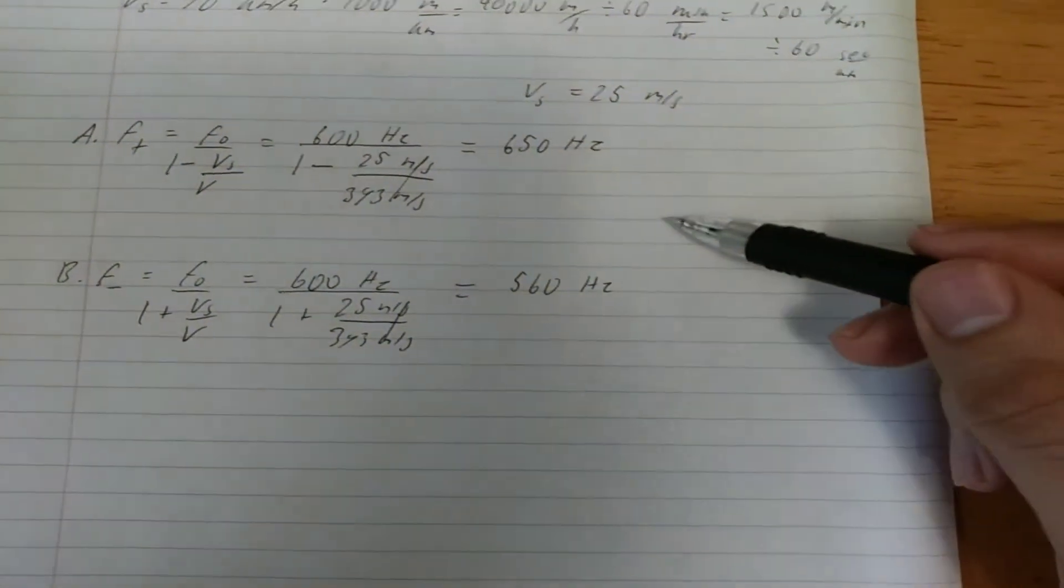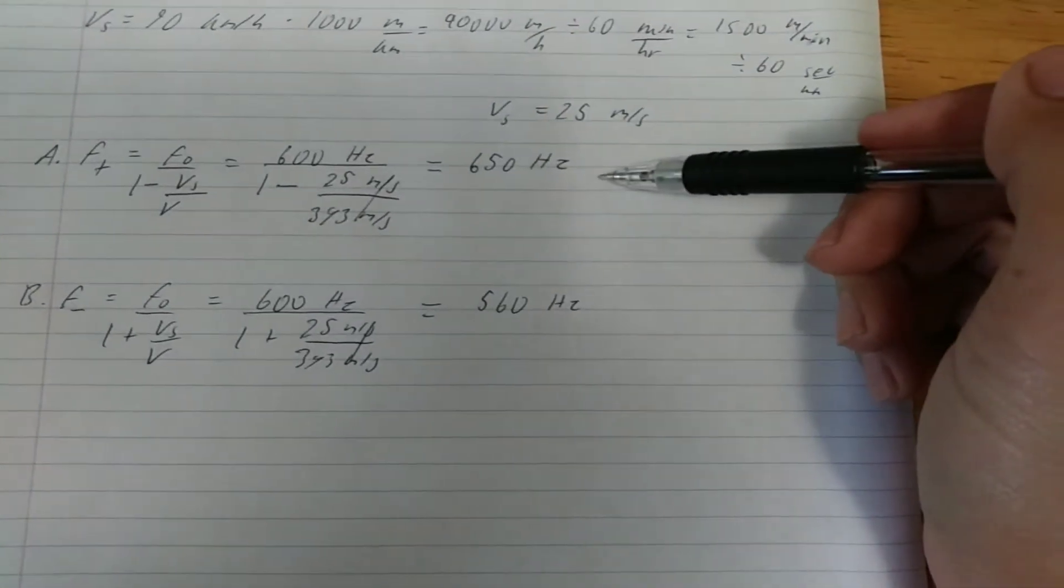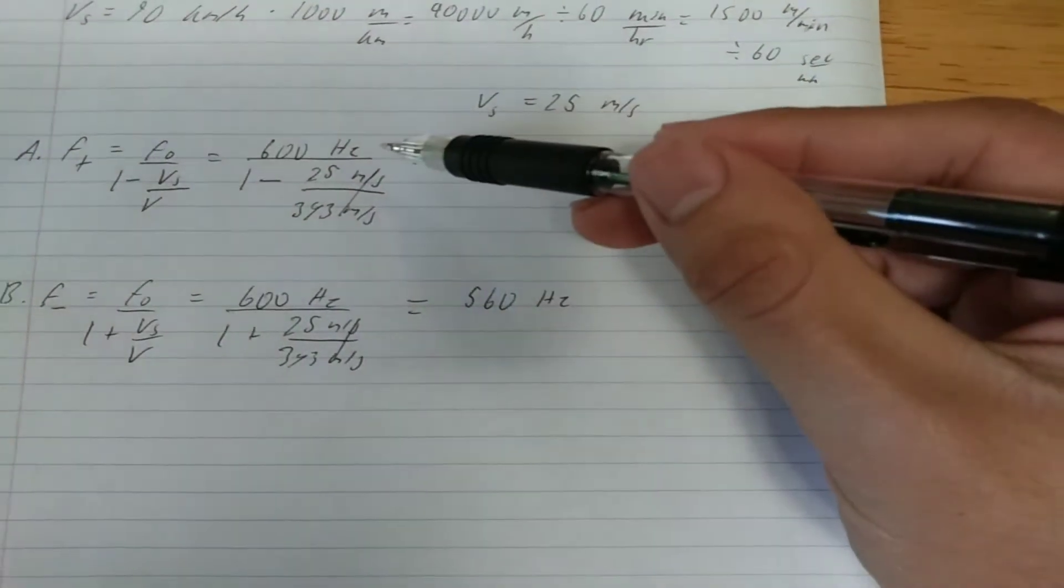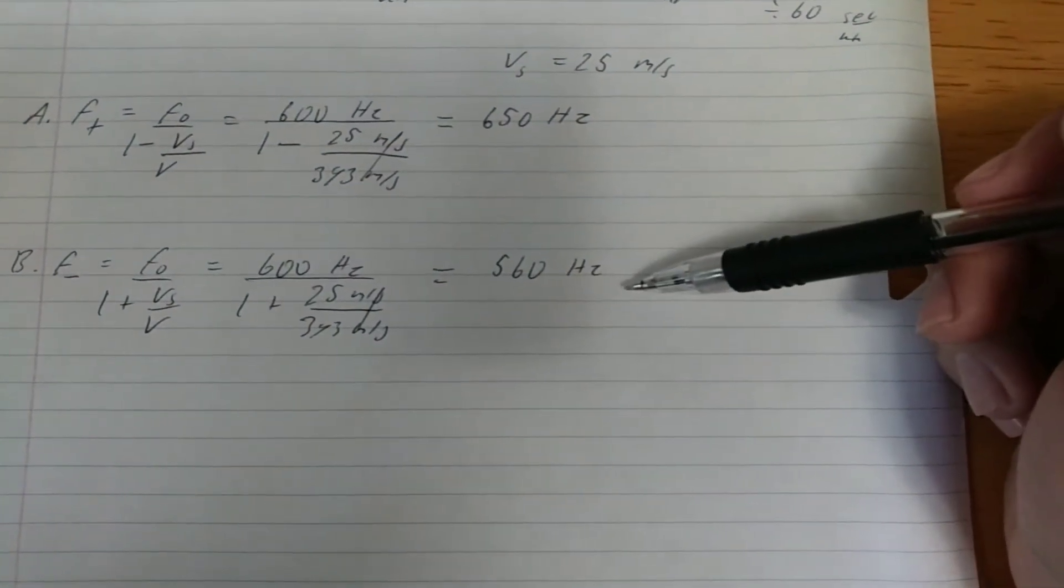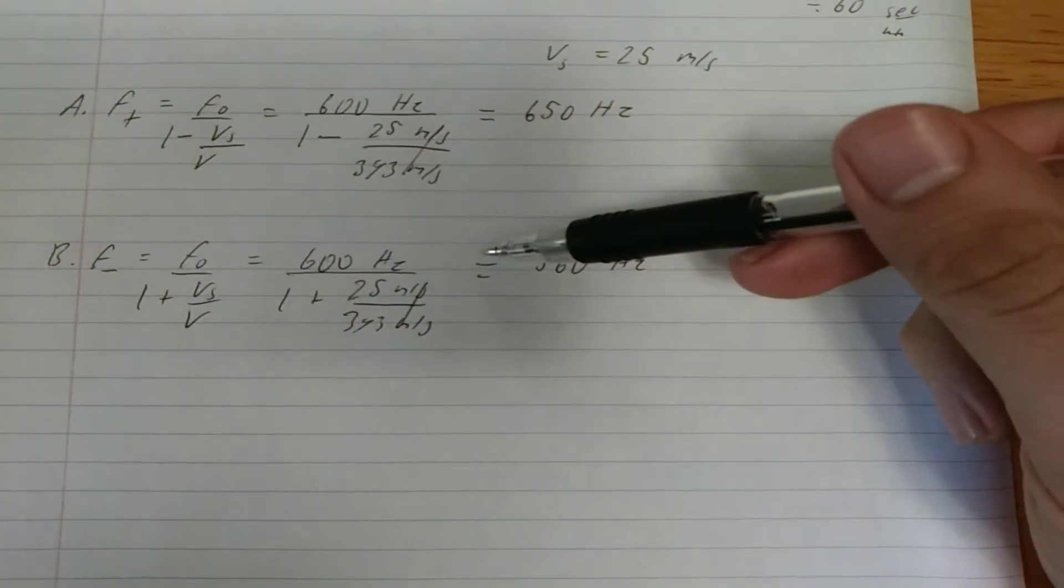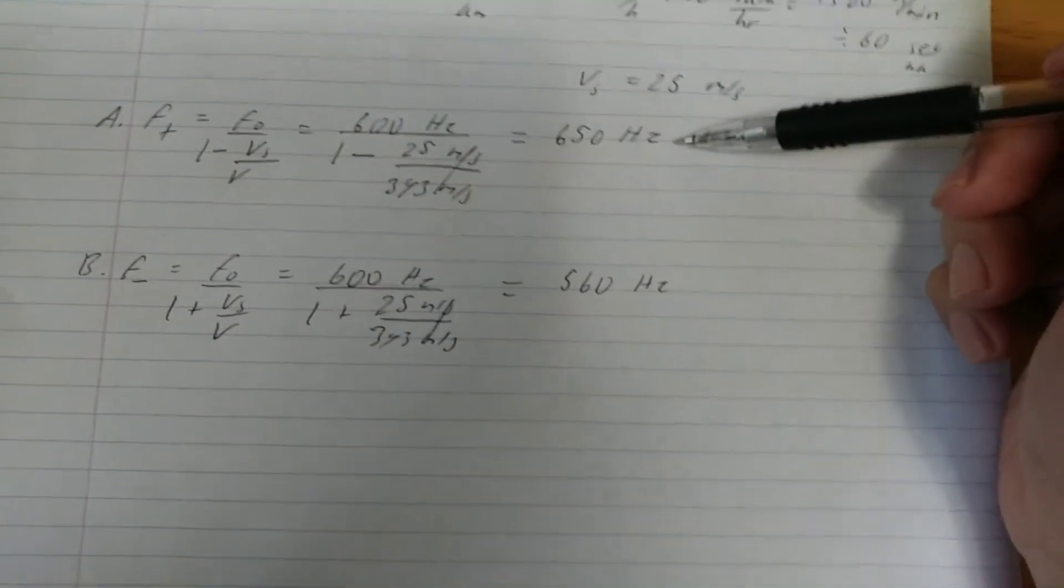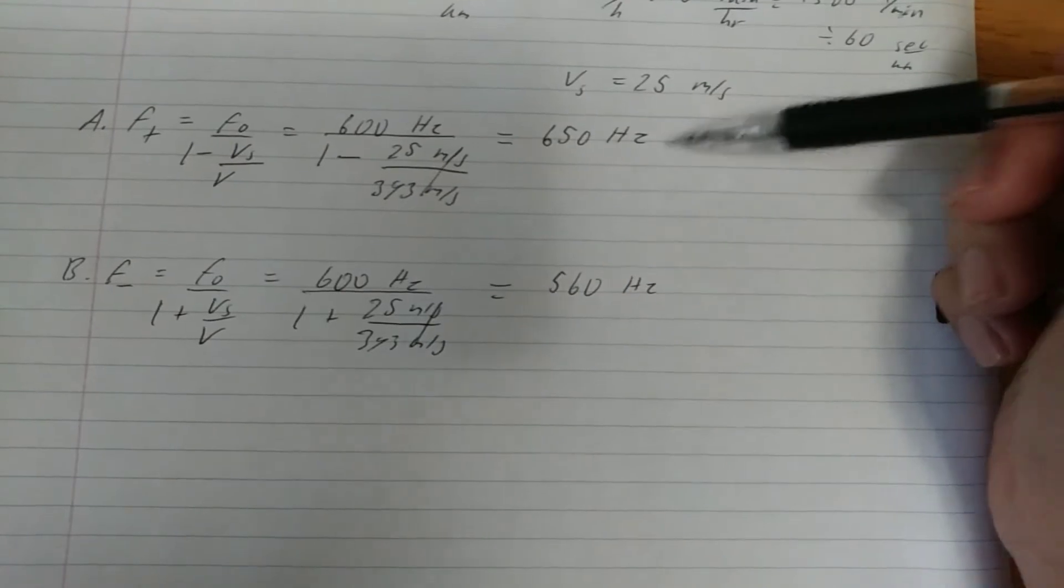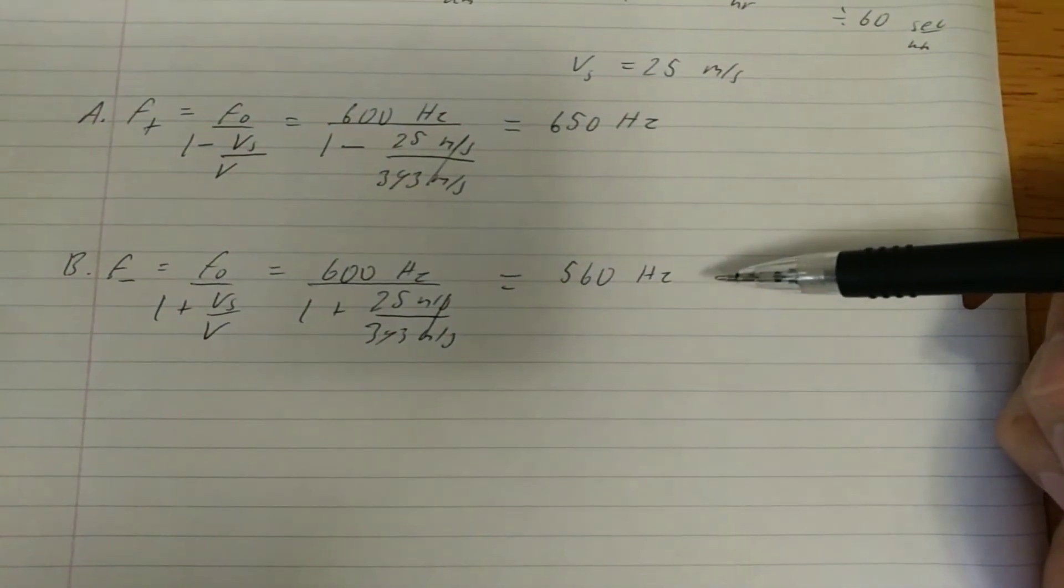So now we know that for part A, a person standing in front of the car hears a frequency of 650 hertz instead of the initial 600, and a person behind the car hears a frequency of 560 hertz as opposed to 600 initially. This makes sense because as the car approaches you, you will hear a higher frequency, and as the car leaves or is driving away from you, you will hear a lower frequency.